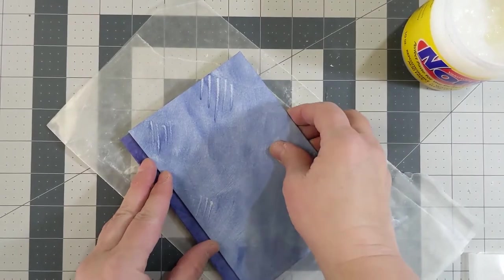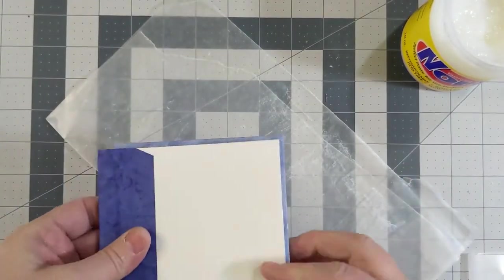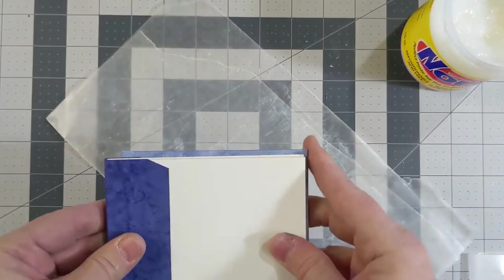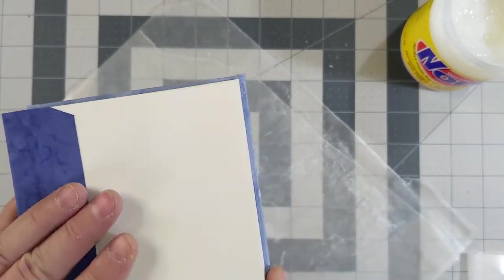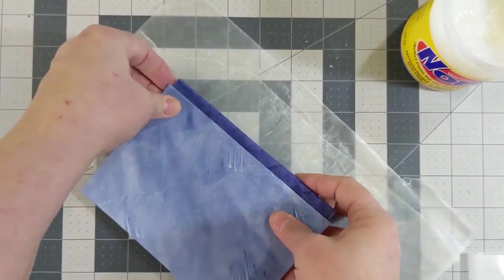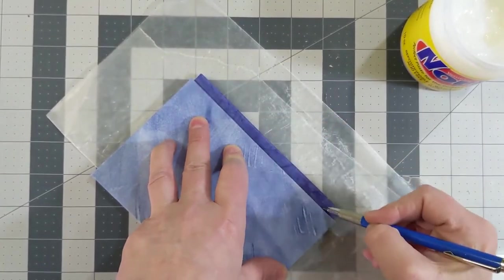Take your cover and put it on your text block. Try to get an idea of how you want it to lay on the text block. Then take a pencil or some other implement like a white gel pen in this case because it's hard to see, and mark about a quarter of an inch away from the spine.